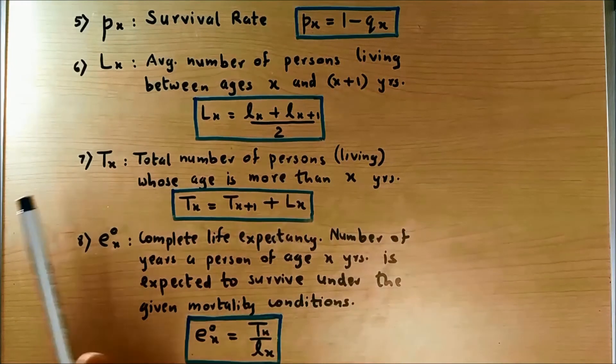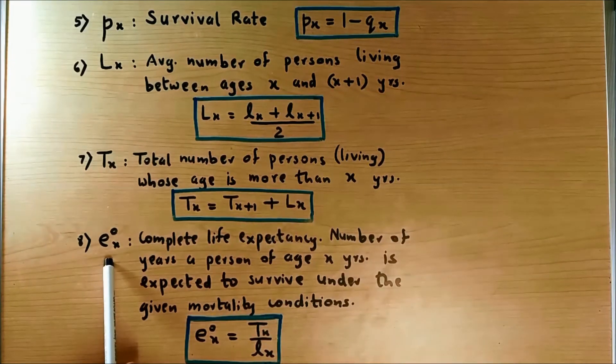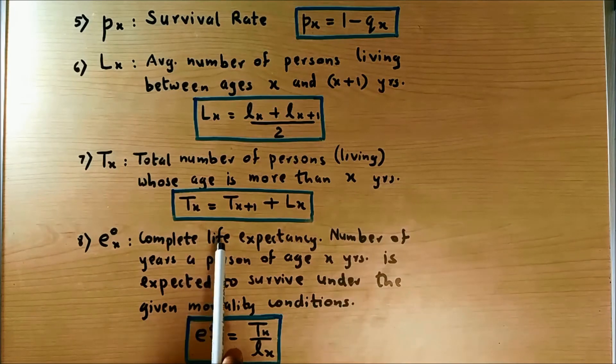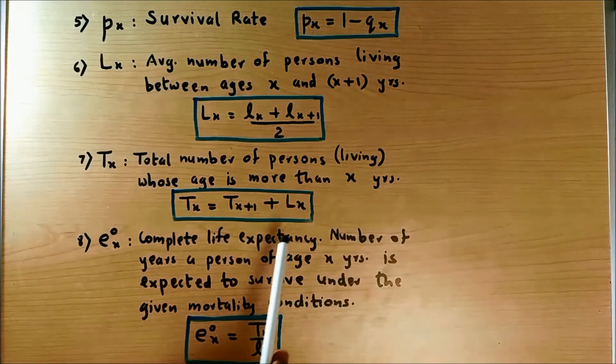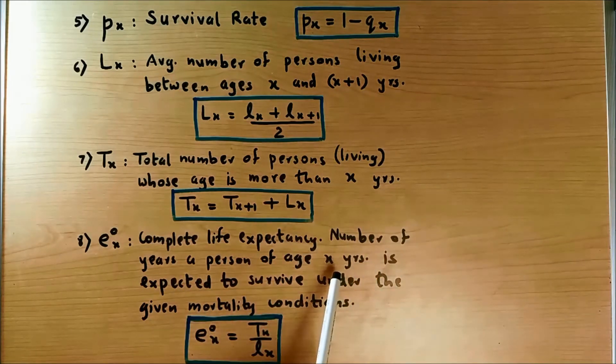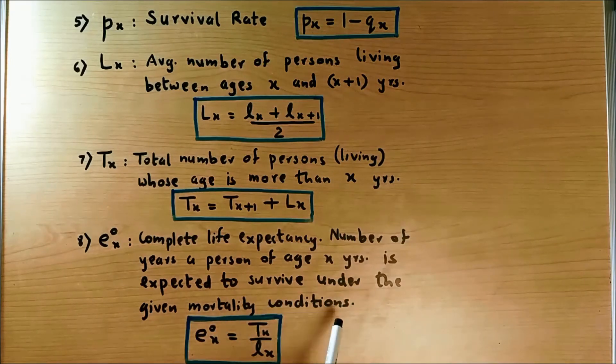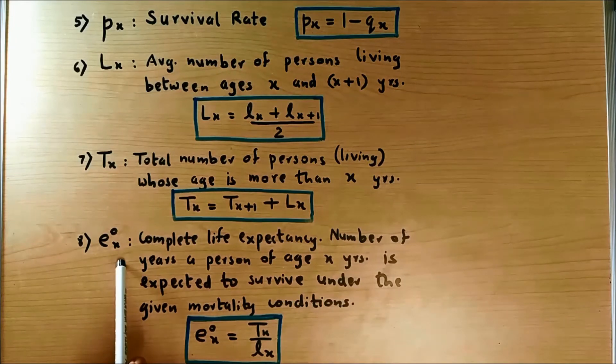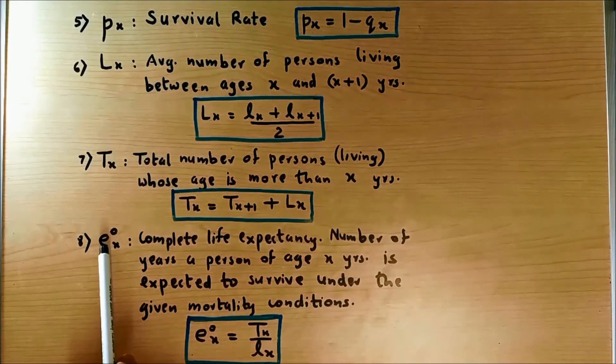Next is E zero X, which is called the complete life expectancy. It means it is the number of years a person of age X years is expected to survive under the given mortality conditions. So how many more years the person of age X will live under the given set of conditions.